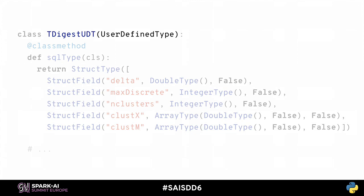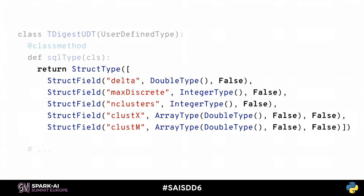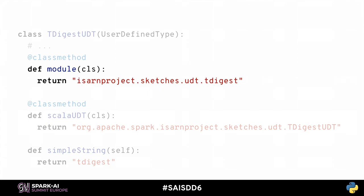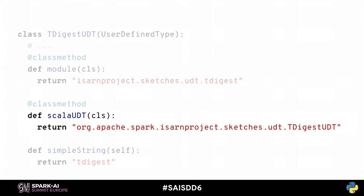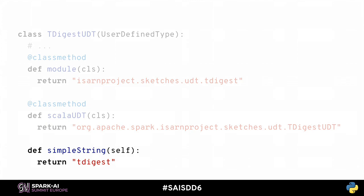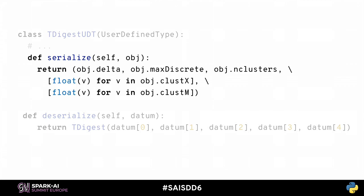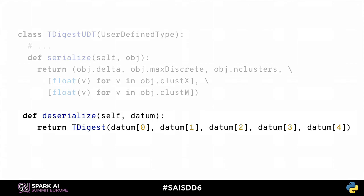Python also wants its own parallel definitions of user-defined types. These types are unsurprisingly very similar to their Scala counterparts — they define the schema of a working aggregation row just in Python syntax instead of Scala syntax. They can name their own Python module, and they also know the name of their Scala counterpart. Serialization also works basically like it does in Scala, but Python's duck typing makes the code a whole lot more compact. The deserialize method essentially just calls Python class construction straight on the column data — there's no other logic there.